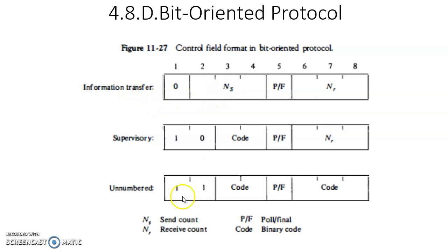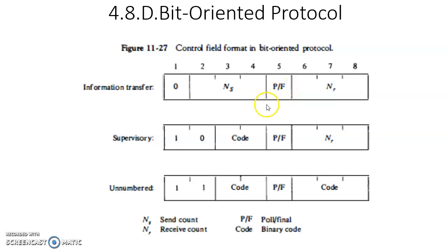In the information transfer format, NS stands for send count and NR stands for receiver count. PF is used to indicate Poll/Final. This bit-oriented protocol frame format can be transmitted by either source or destination. If the source is sending data, P equals 1; if the receiver is sending data, F becomes 1. P and F distinguish between source and destination — who is sending data to whom — using this fifth bit.